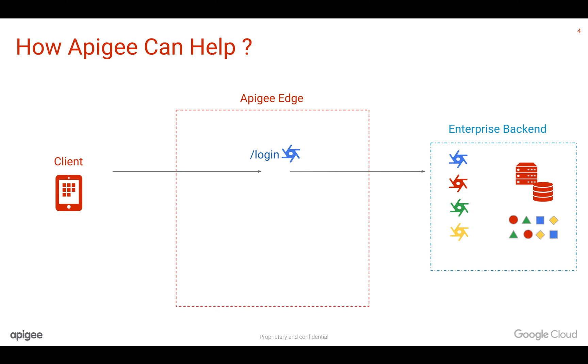Whenever a login request comes to Apigee Edge, it will forward it to the backend. And on the way back, if the login is successful, Apigee Edge can generate a JWT token and send the JWT token back to the client.